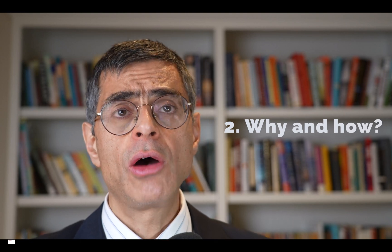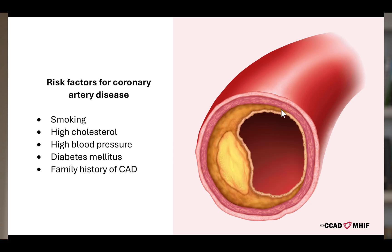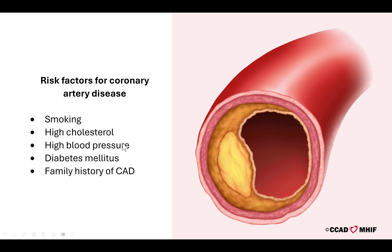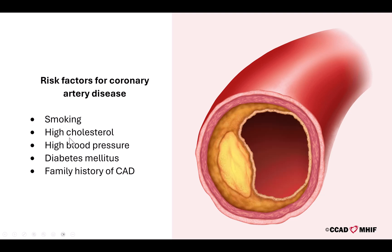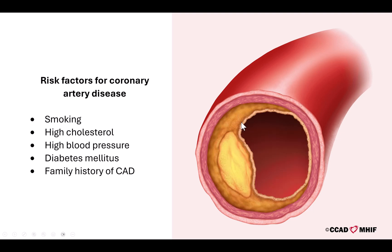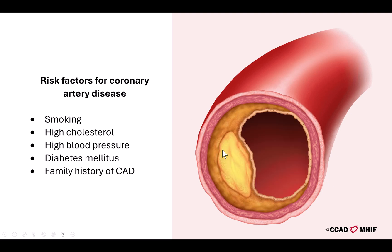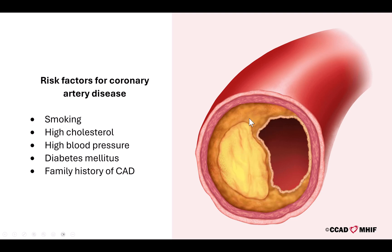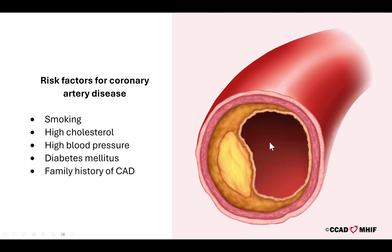Question two: why and how did I get a CTO? CTO is one form of what's called coronary artery disease or coronary atherosclerosis, which simply means blockage development within the arteries of the heart. There are many potential reasons why this can happen. We know that smoking, high cholesterol levels, high blood pressure, diabetes, and genetic factors can increase the risk of developing blockages. Also, the development of blockages is more likely as one gets older. Those blockages are initially partial, causing only partial obstruction to blood flow, but over time they may get worse and eventually lead to complete occlusion of the coronary artery.